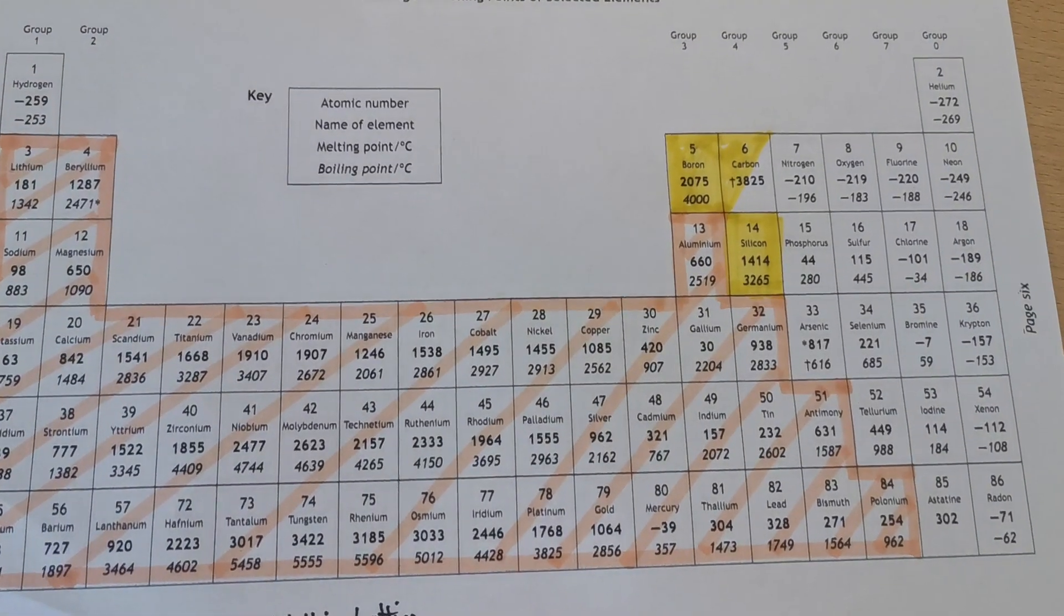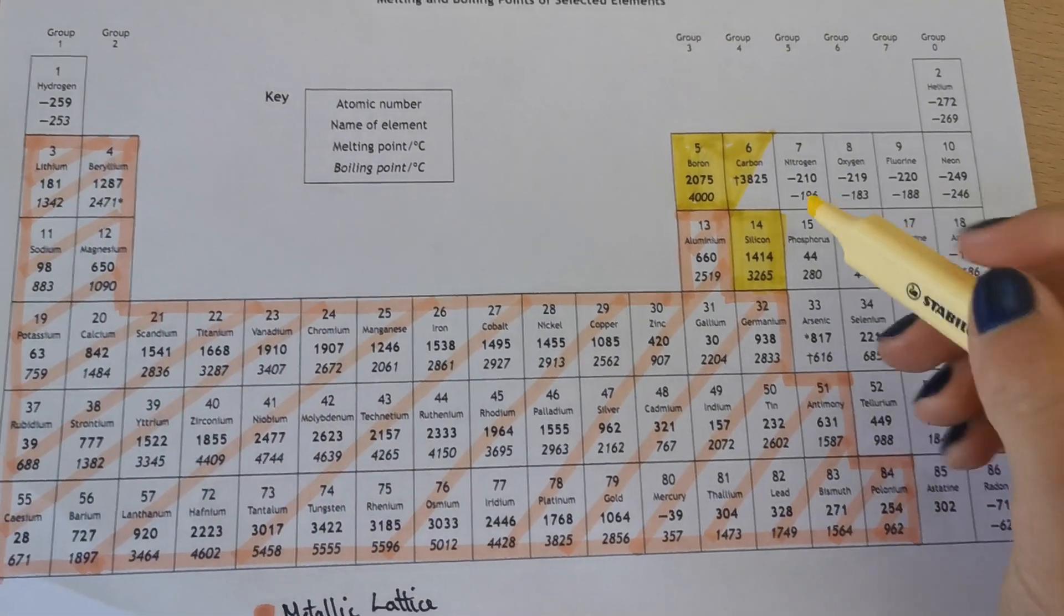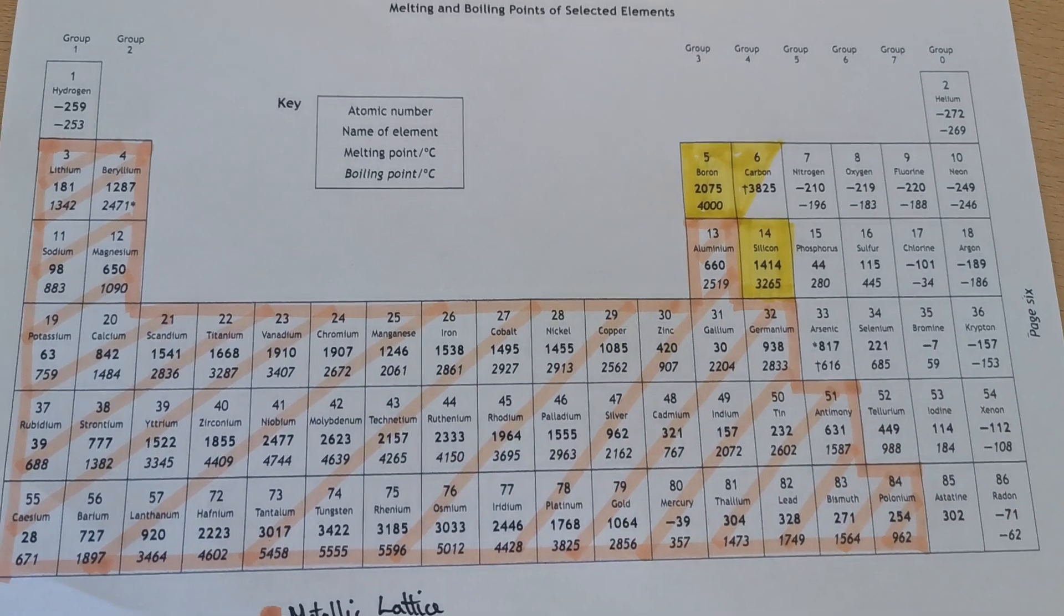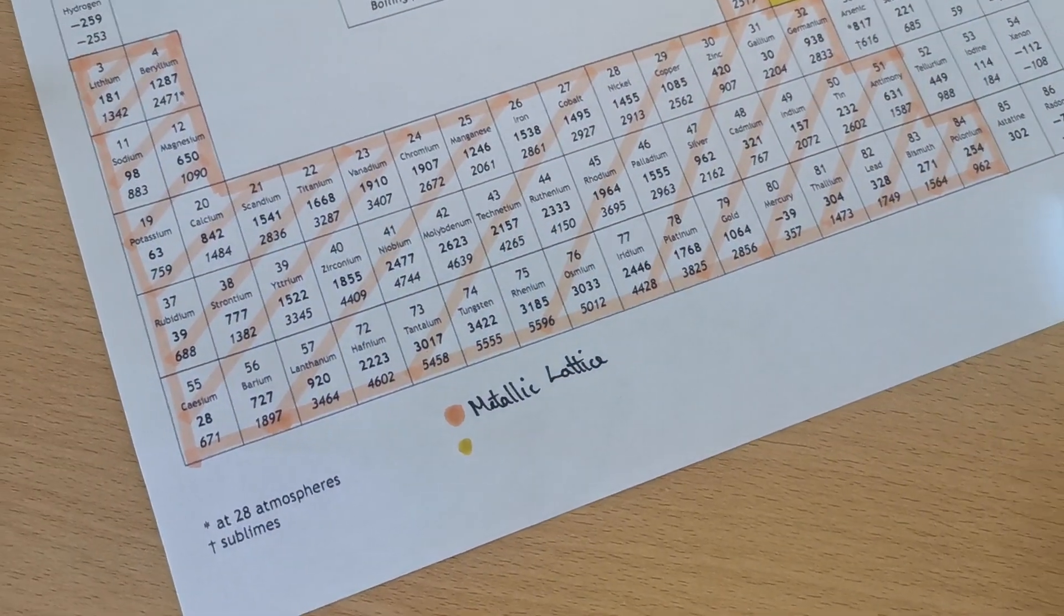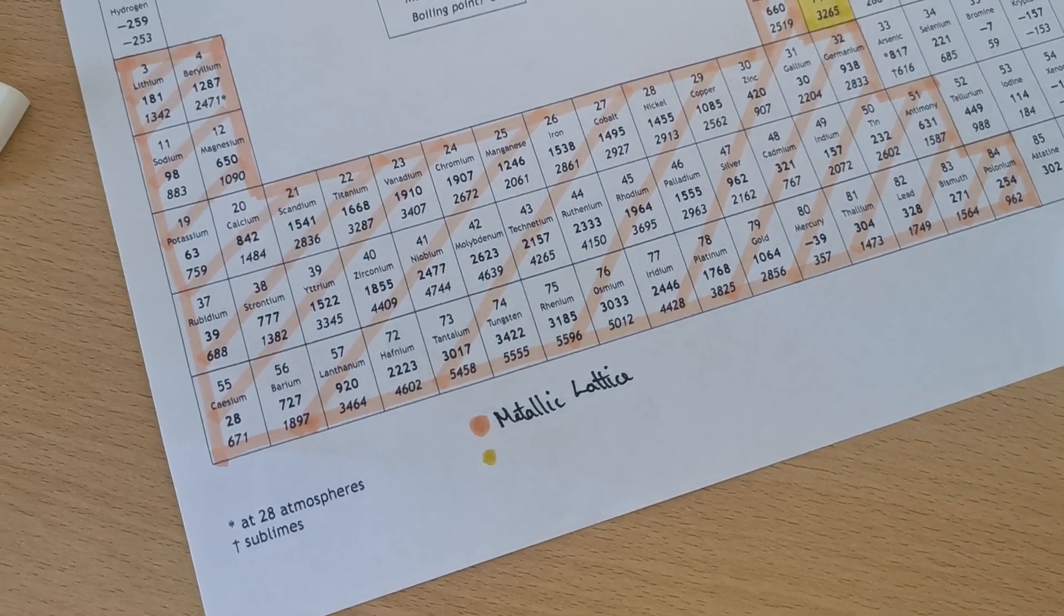That's me coloured in the three covalent networks: boron, carbon and silicon. Remember, carbon only coloured in half the box and I'll explain why in a second. And then another dot for covalent networks in the key.